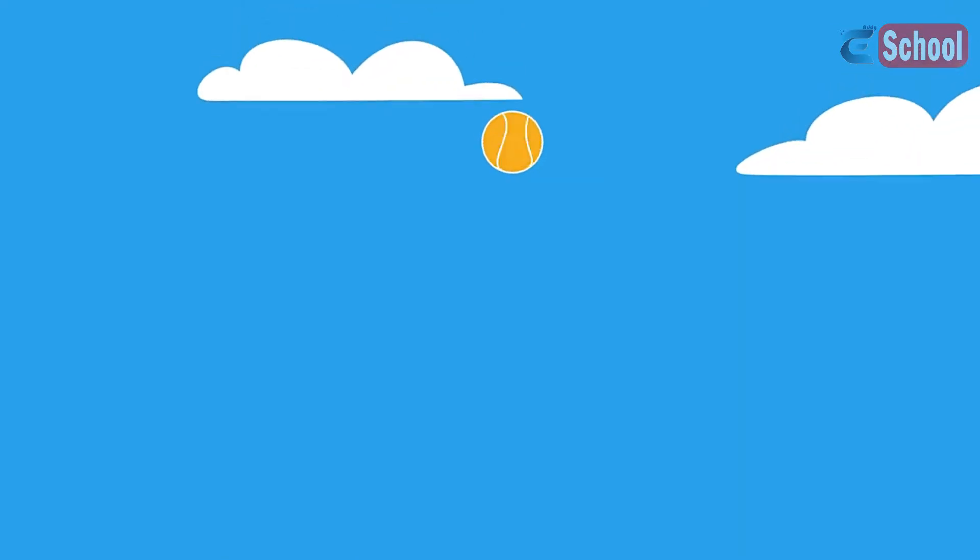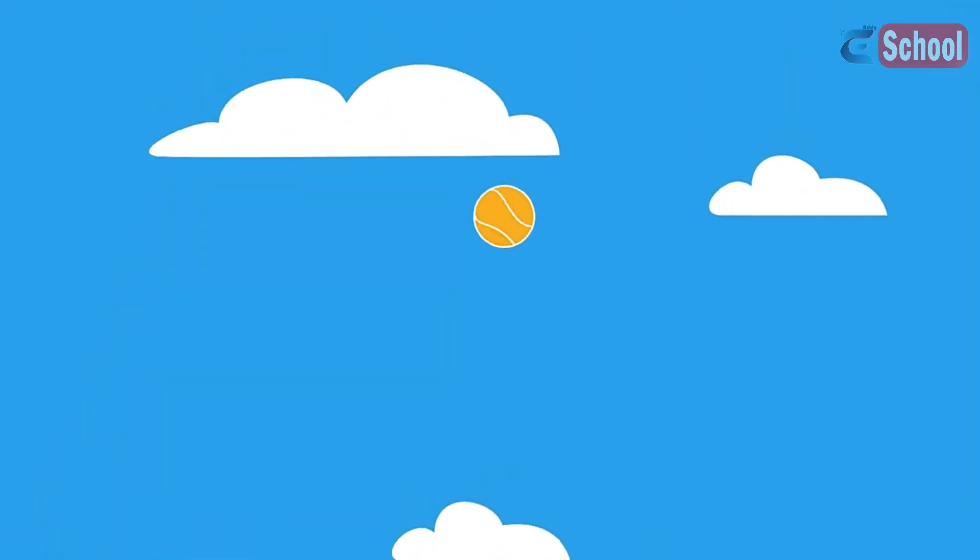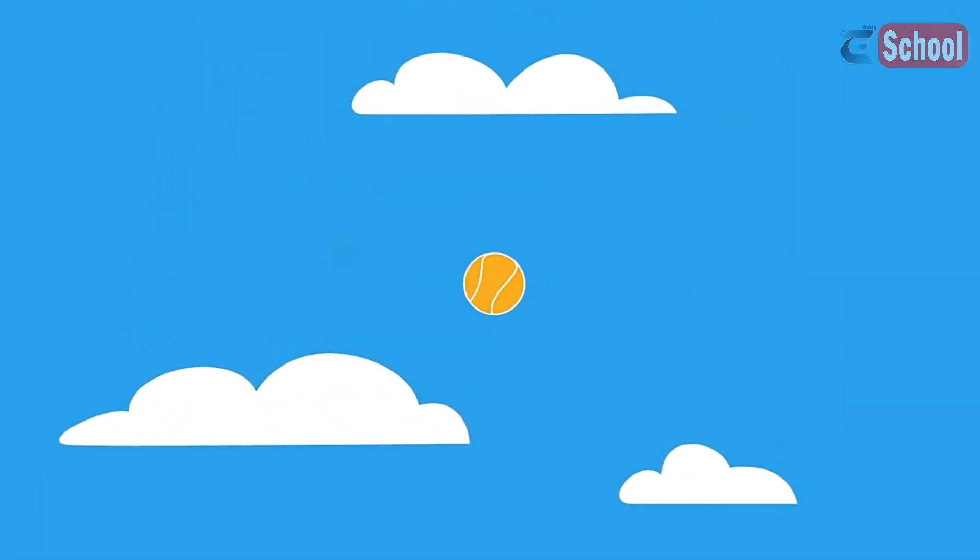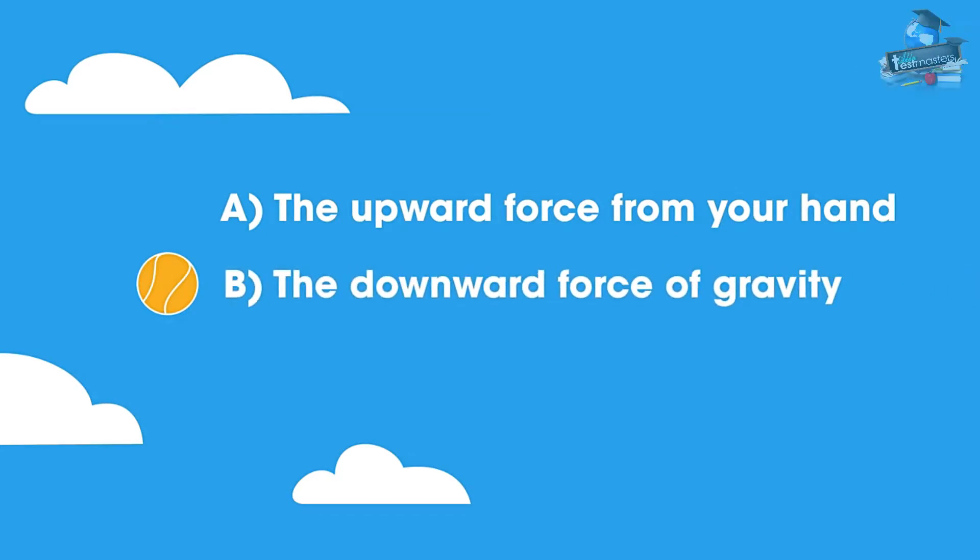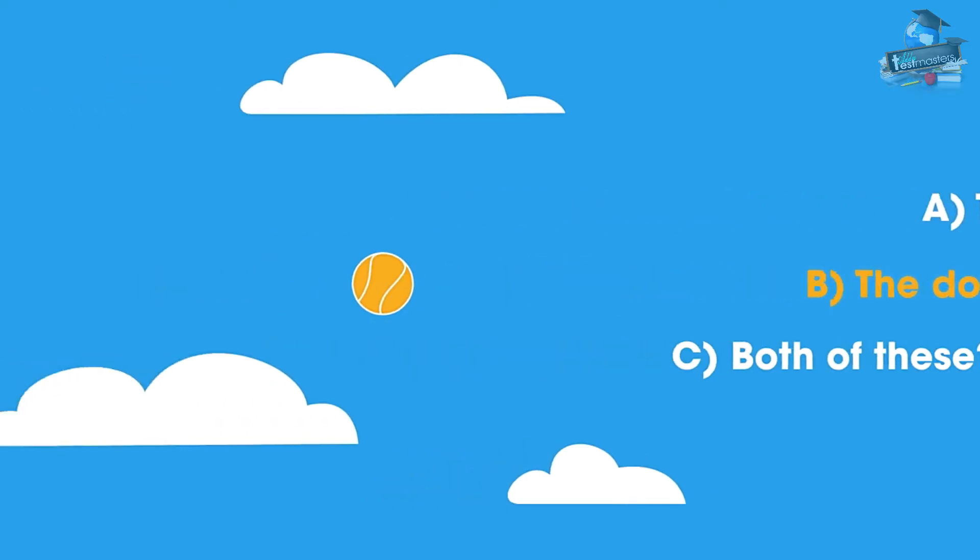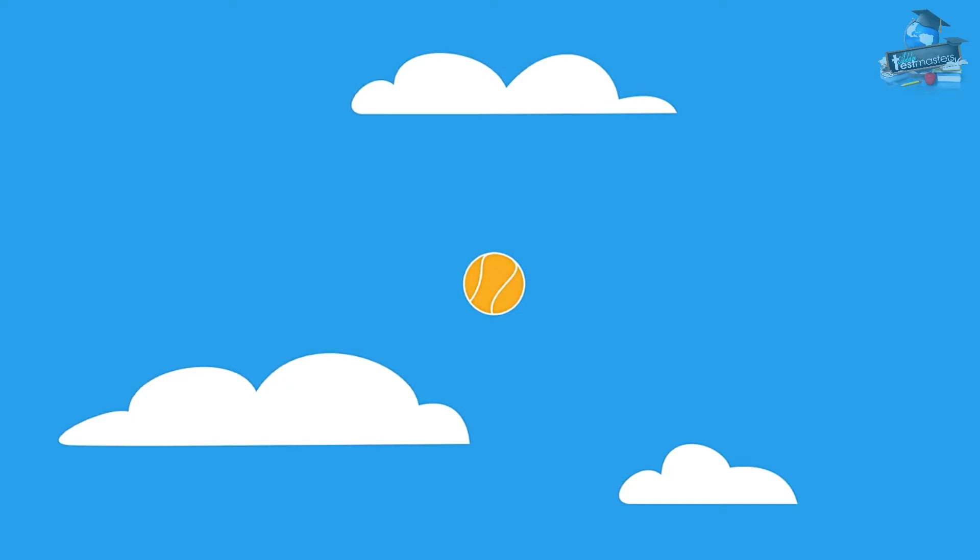You have just thrown a ball and it's traveling upwards. Neglecting air resistance, what force or forces are acting on the ball? A) the upward force from your hand, B) the downward force of gravity, or C) both of these? The answer is just the downward force of gravity, which gradually slows the ball, stops it, then brings it back.